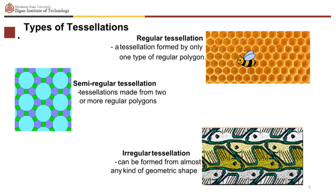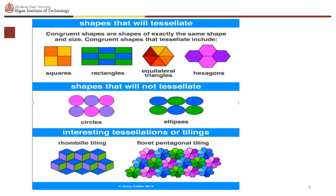While a regular tessellation can be formed from almost any kind of geometric shape, shapes that form regular tessellations are squares, rectangles, equilateral triangles, and regular hexagons. Shapes that will not tessellate are circles and ellipses.